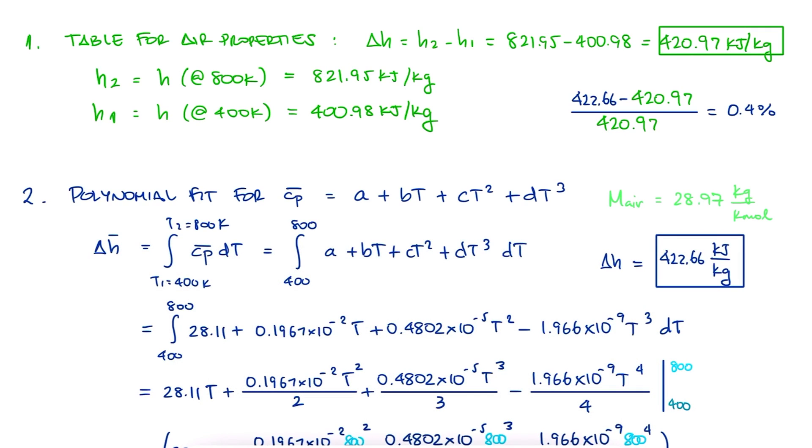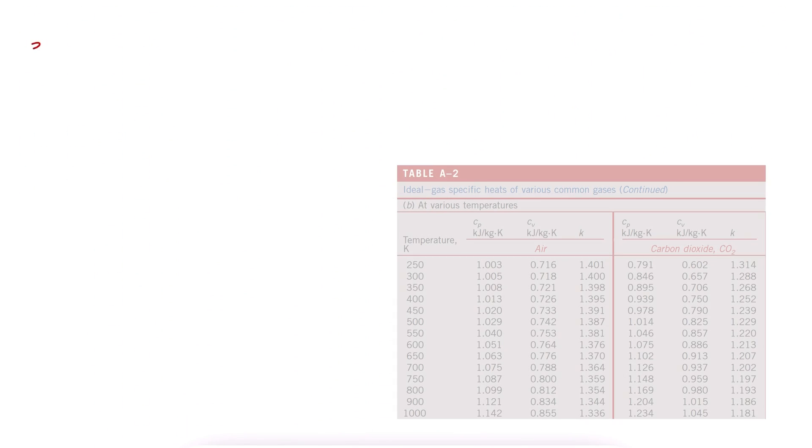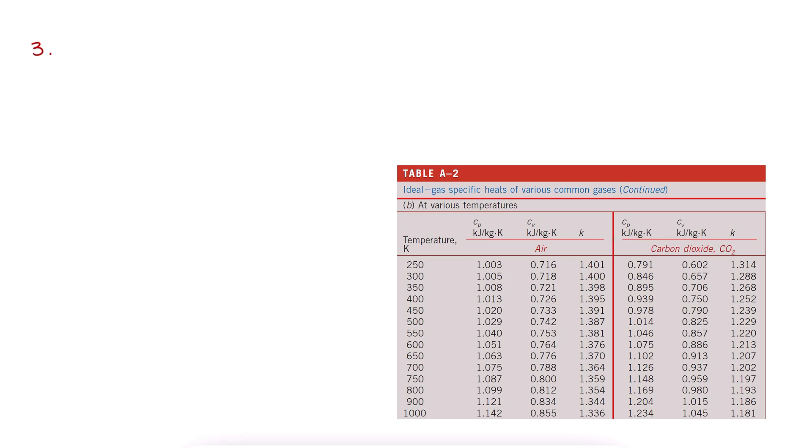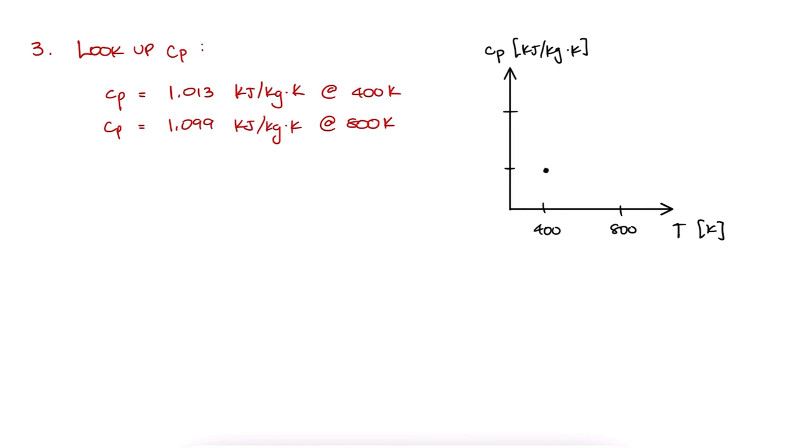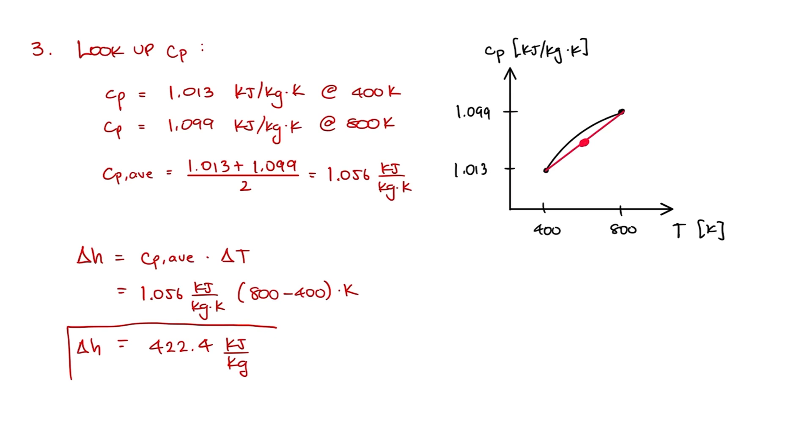The third option is to use the ideal gas specific heat of various common gases at various temperatures table to look up the specific heat Cp at 400K and 800K. Assuming a linear relationship between those two temperatures, we take the average of these two values for Cp. The change in enthalpy would therefore be this average value for Cp times the change in temperature 800 minus 400K. This yields a value of 422.4 kJ per kilogram.